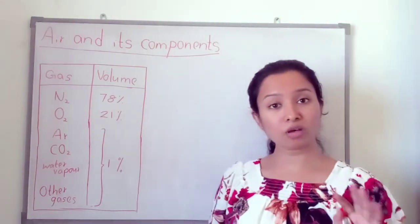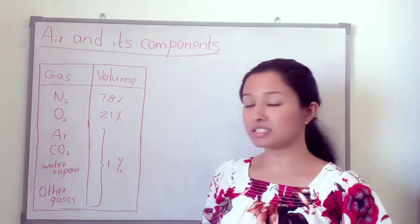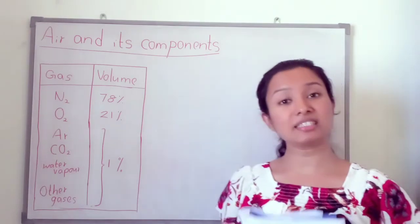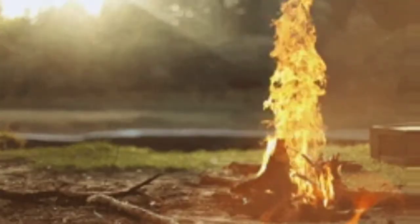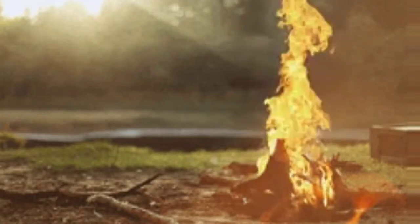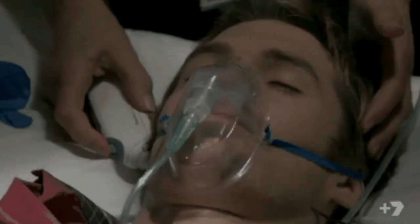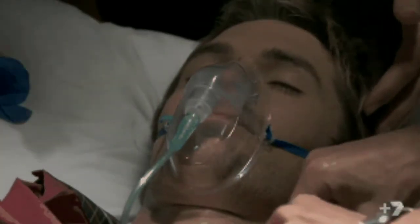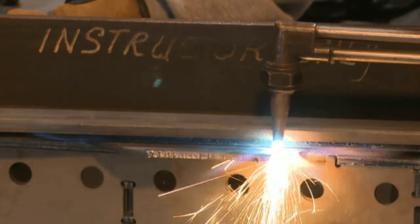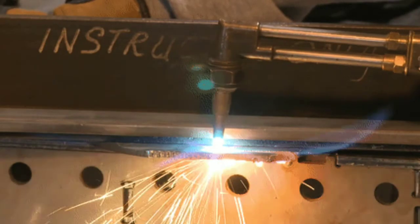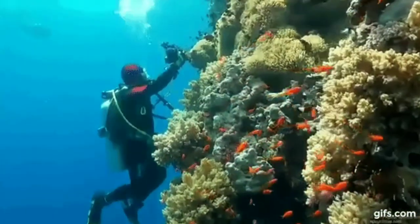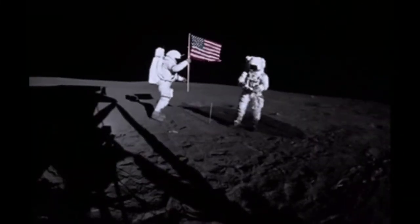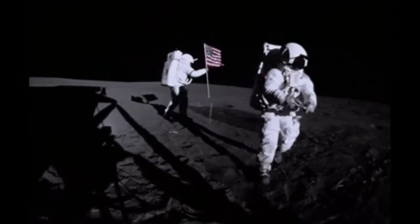Oxygen makes up 21% and is the most important gas in the air. It is essential for our respiration — we breathe in oxygen. Oxygen is also necessary for combustion, so it is called a supporter of combustion. It is used for patients with respiratory difficulties, in oxyacetylene flames for welding and cutting metals, and is vital for divers and astronauts.